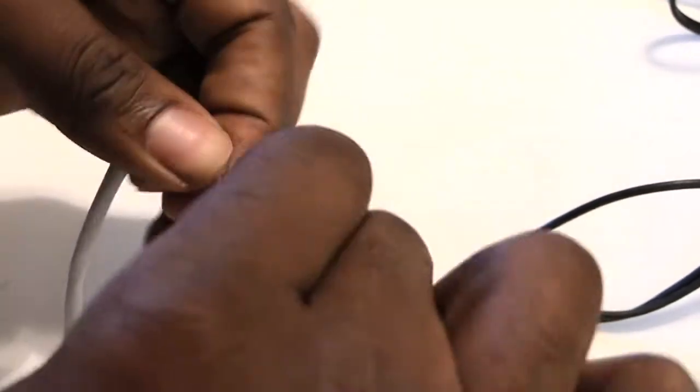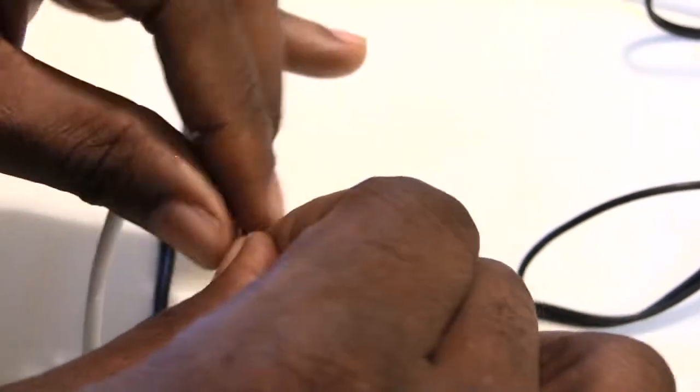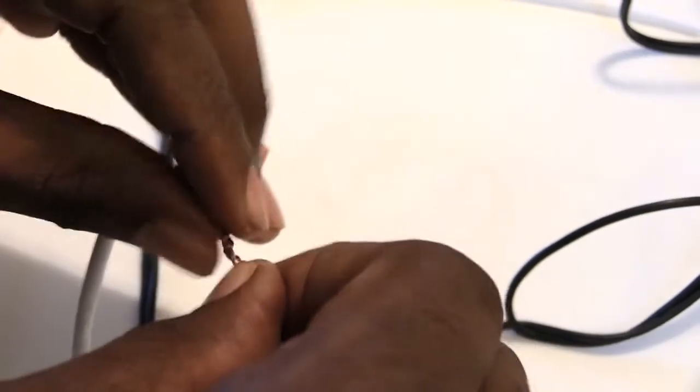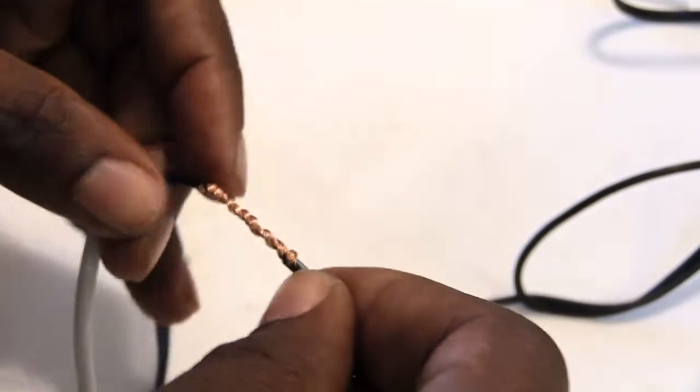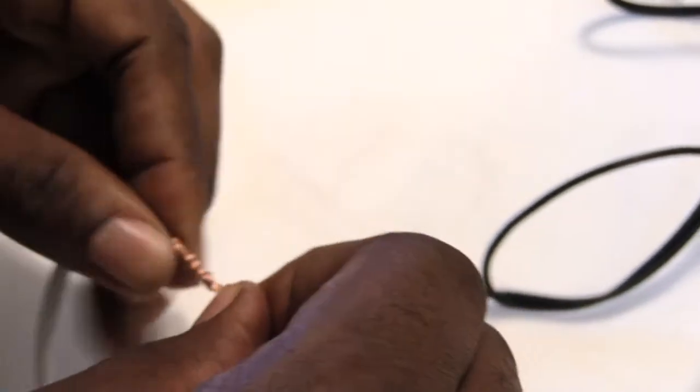At the end you want to make sure that you press it down really tight. This makes a nice strong connection between the wires and this is called a western union splice or twist.